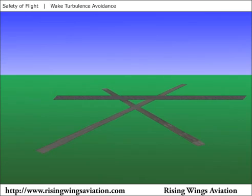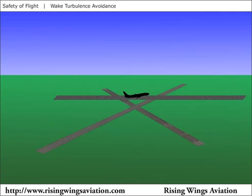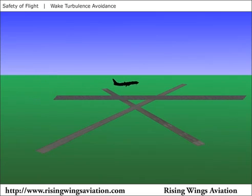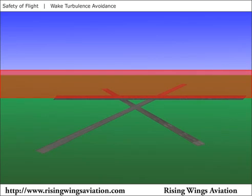Wake turbulence must also be visualized in relation to all operations near larger aircraft, not just when arriving or departing behind one. Maybe another airplane departs or lands via a runway which crosses the runway you'll be landing on or departing from. If that airplane's nose wheel is in the air when it crosses your runway, it just showered that runway intersection with wake turbulence, and that wake turbulence will drift with the wind. If an airplane executes a low approach, missed approach, or a touch and go landing, then the runway they just flew over will have wake turbulence descending on it, which drifts with the wind for the next several minutes.